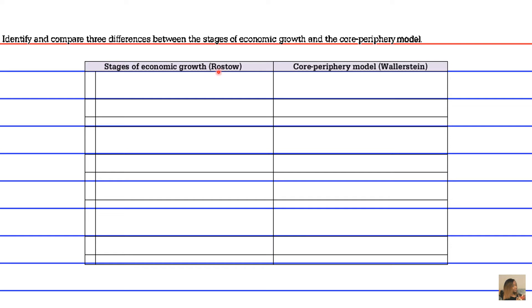Rostow envisioned economic growth in terms of stages, whereas Wallerstein envisioned economic growth as a system, which he called the Core Periphery Model.